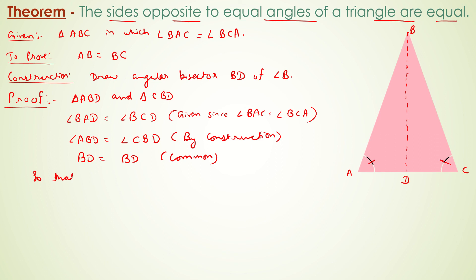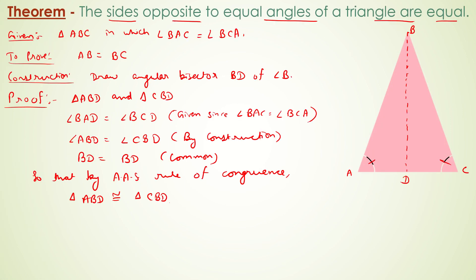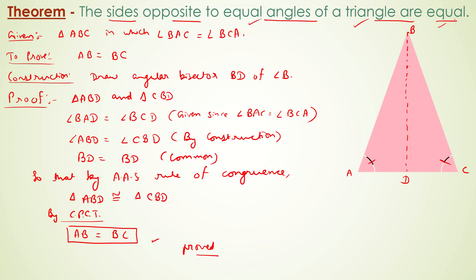By the Angle-Angle-Side rule of congruence, triangle ABD is congruent to triangle CBD. And hence, by CPCT, we can say that AB is equal to BC — that is what we had to prove. So we can say that the sides opposite to equal angles of a triangle are equal.